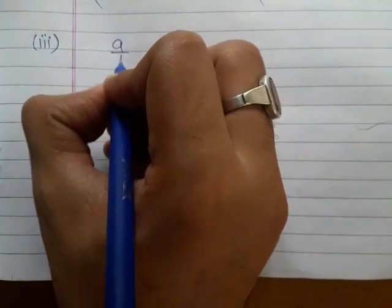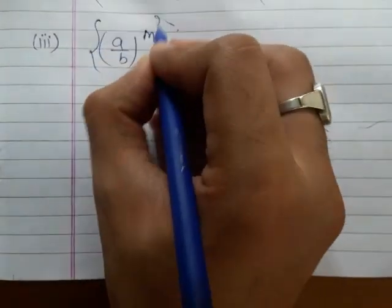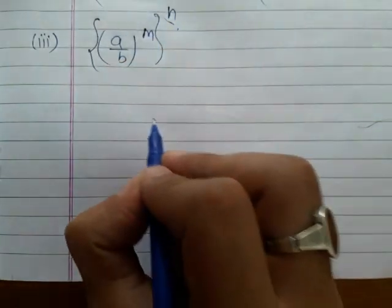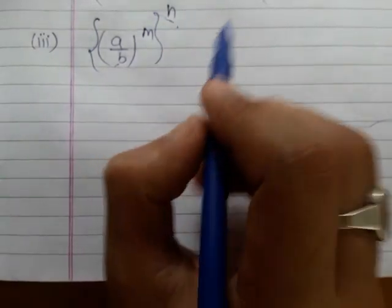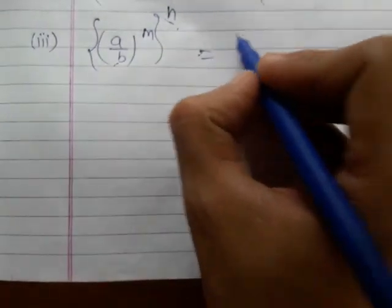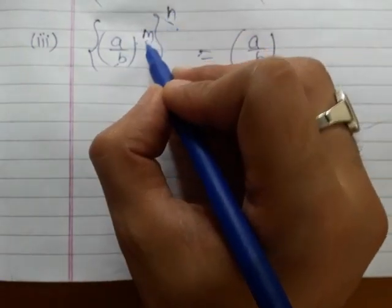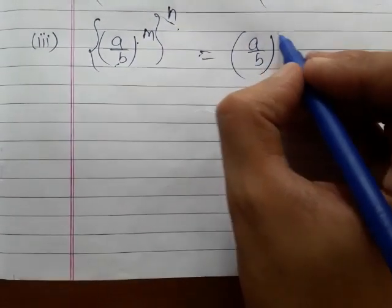The third law of exponents states: suppose there is a rational number a over b whose power is m, and the whole is raised to the power n. Then we can simply write a over b and multiply the powers together.